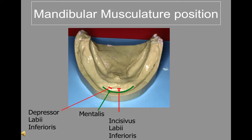This is the case when the ridge resorbs severely, as seen on this cast. It can dictate the level of the extension of the labial flange. Surgical repositioning of the muscle is sometimes used to extend the flange area.